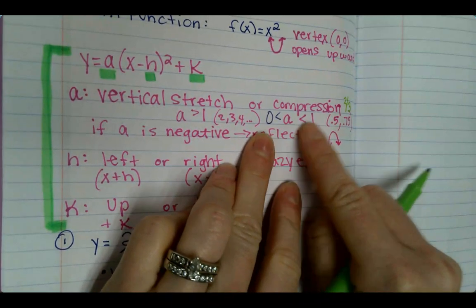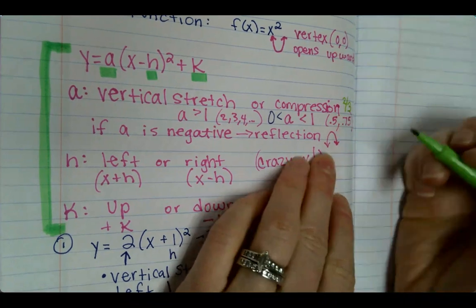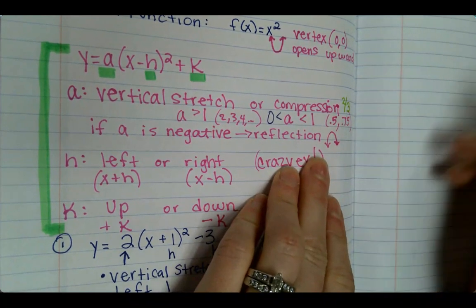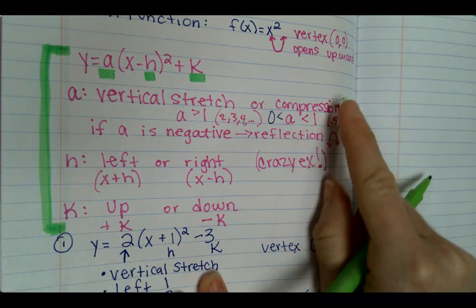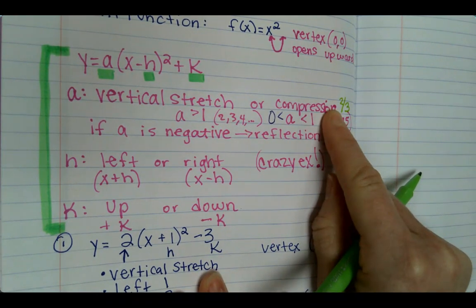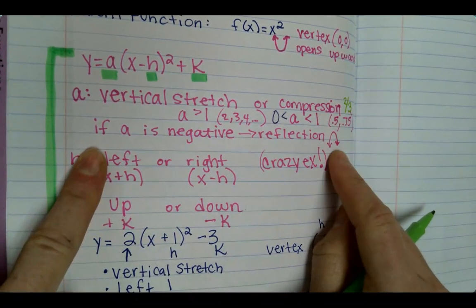So the a could be two-thirds, and two-thirds is like 0.6 repeating, so that would be a compression because it's between 0 and 1. Go ahead and add two-thirds here. And then if a is negative, it's a reflection.